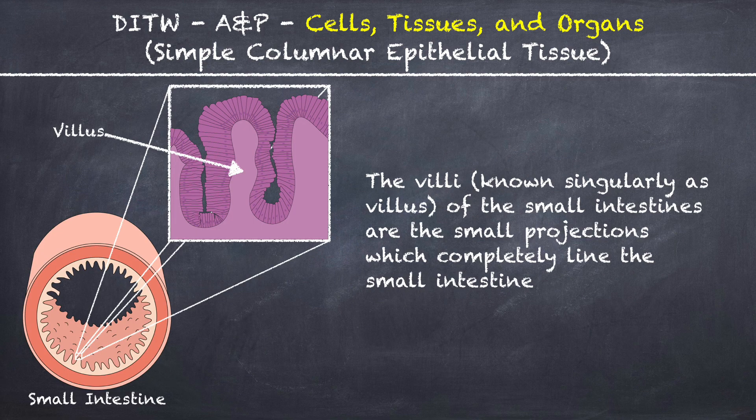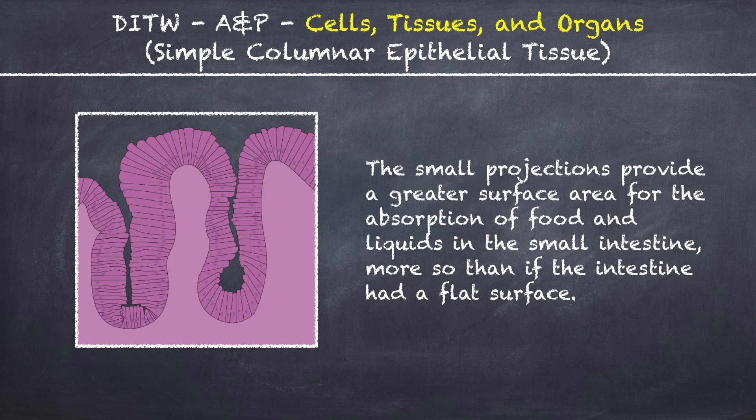The villi, known singularly as villus, of the small intestines are the small projections which completely line the small intestine. These small projections provide a greater surface area for the absorption of food and liquids in the small intestine, more so than if the intestine had a flat surface.